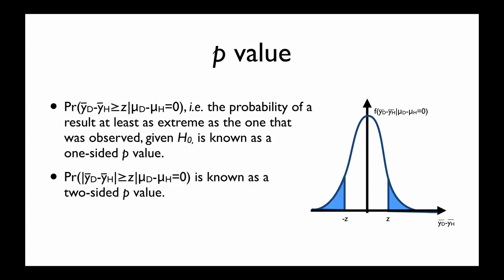If we instead look at the absolute value of the observed situation, we can assess what is known as a two-sided p-value — that is, how extreme it is that you observe a difference as large or as small as the current difference between means. A property we will use later in multiple hypothesis correction is that p-values by definition are uniformly distributed under the null hypothesis. That is, if the null hypothesis is true, we are equally likely to observe a p-value of 0.1 as 0.3 as 0.9.